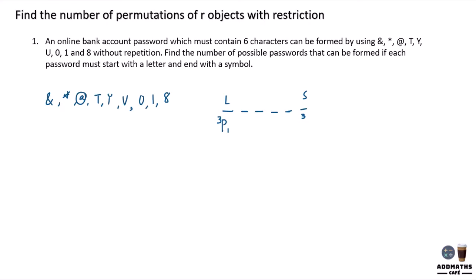So at the last part, I can choose, pick 1 from 3 symbols to put it on the last part. And the left over has 4 left. So let's say I have 9 here. I choose away 1 symbol, I choose away 1 letter, I will left with 7 characters. So 7 characters I have to choose 4 of them to put here. It will be 7P4.